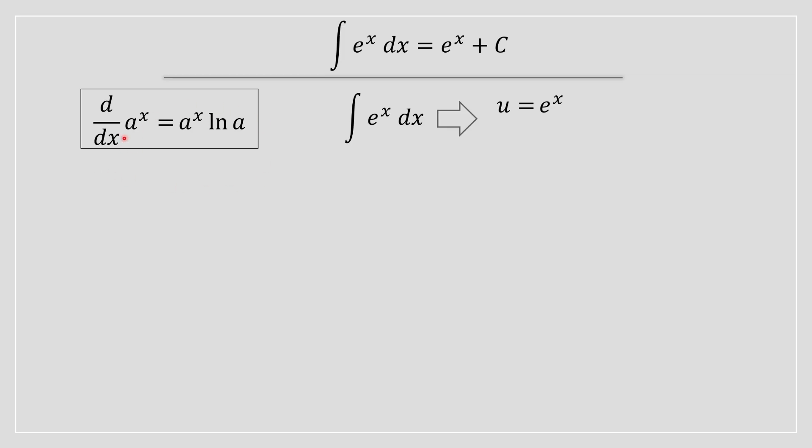When you have an exponent and you take the derivative of some value a to the exponent of x, which we have over here - in this case, it's Euler's number - this is the result of the derivative.